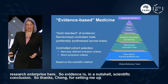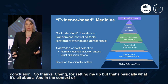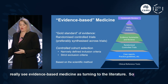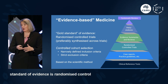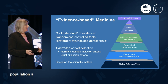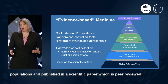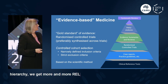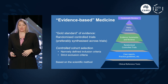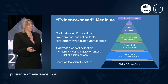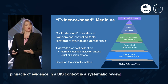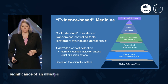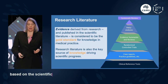In the context of clinical research, we see evidence-based medicine as turning to the literature. The gold standard of evidence is randomized controlled trials done across varying populations, published in peer-reviewed scientific papers. As we go up the evidence hierarchy, we get more and more reliable evidence. At the very top, the pinnacle in a clinical context, is a systematic review, which combines the outcomes of various studies and does a meta-analysis to understand the significance of an effect in a particular population.